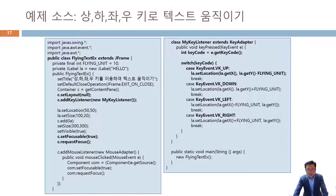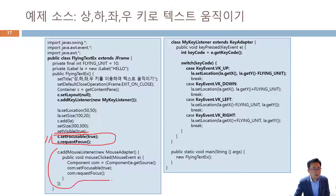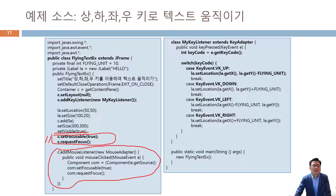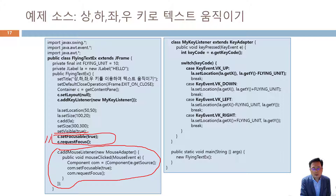예제 10-8에서 중요한 것이 있는데, setVisible 다음에 키보드 포커스를 준다고 했잖아요. 만약 포커스를 잃어버리는 경우가 있어요. 이럴 때 마우스로 윈도우를 클릭하면 다시 포커스를 받는 방법이 있는데, 이것을 실습하면서 한 번 더 여러분들에게 보여줄 것입니다.